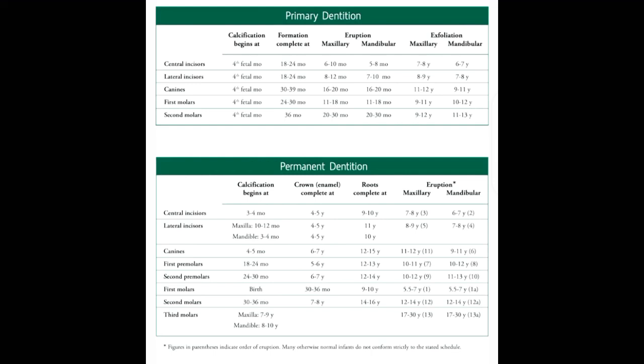The graph shown in the video is very important for the estimation of age just by looking at the radiograph or OPG. It is very important to remember or have a rough idea about the eruption and exfoliation dates of both primary and permanent teeth. It is important to remember the ranges within which the primary and permanent dentition can erupt or exfoliate.